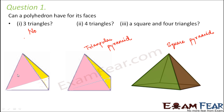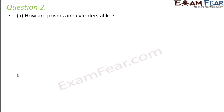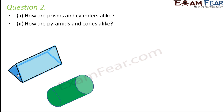Question number two: how are prisms and cylinders alike? How are pyramids and cones alike? Looking at a prism and a cylinder, a cylinder is like a circular prism. In a prism, the top and bottom surfaces are congruent polygons. The same is true for a cylinder — the top and bottom surfaces are congruent circles. So the only difference is that in a prism the top and bottom surfaces are polygons, whereas in a cylinder they are circles. Therefore a cylinder is like a circular prism.